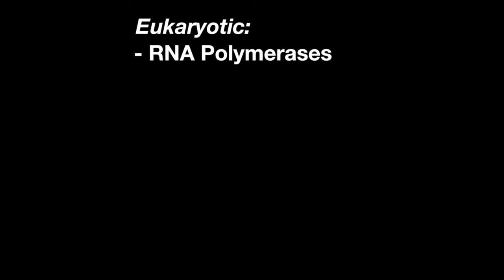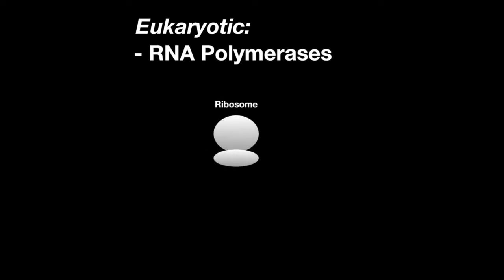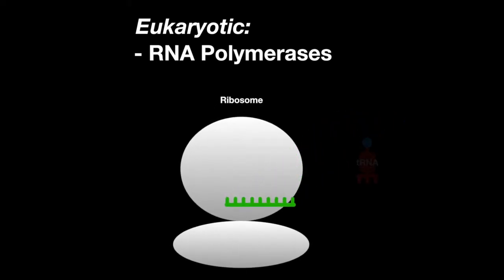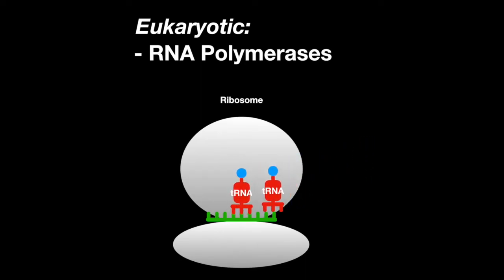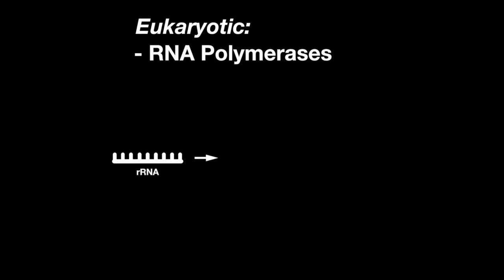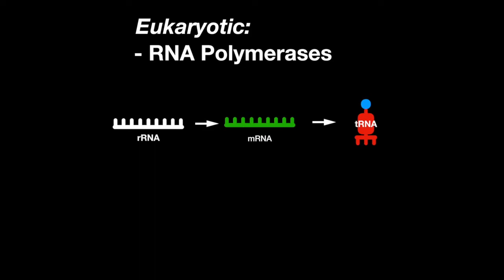Listen closely to the order. Ribosomal RNA is used to synthesize the ribosome, then the ribosome attaches to mRNA, and finally tRNA is used to translate. Ribosome to mRNA to tRNA — that's the same order in which the three eukaryotic RNA polymerases synthesize RNA. RNA polymerase 1 makes rRNA, 2 makes mRNA, and 3 makes tRNA.